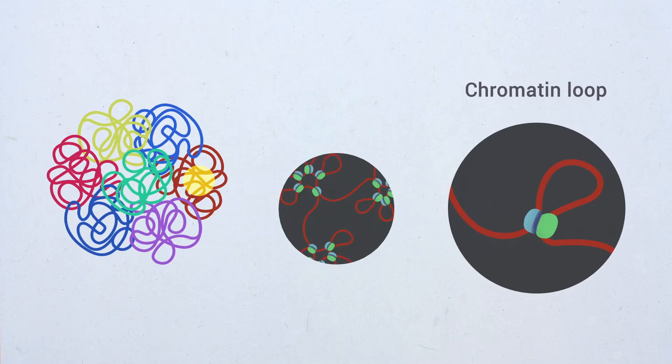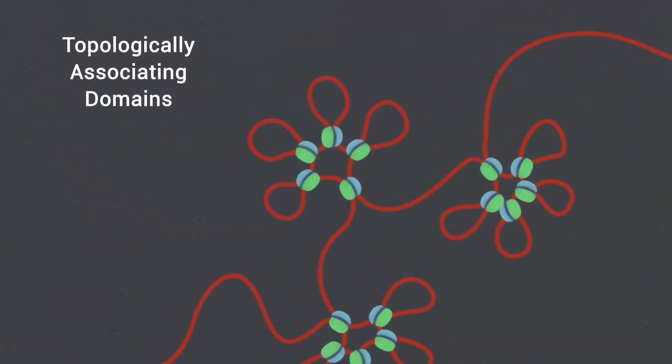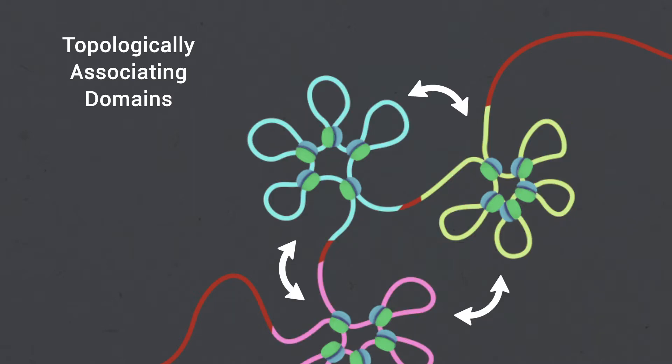In addition to loops, interphase chromatin is organized into higher order structures such as topologically associating domains that represent regulatory domains defined by preferential intra-domain contacts, whereas contacts across topologically associating domain borders are less frequent.